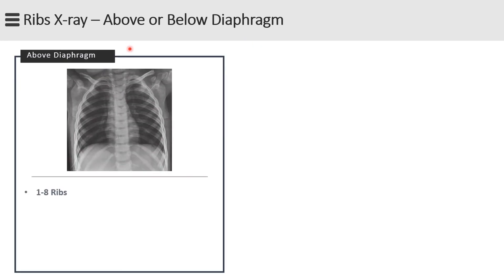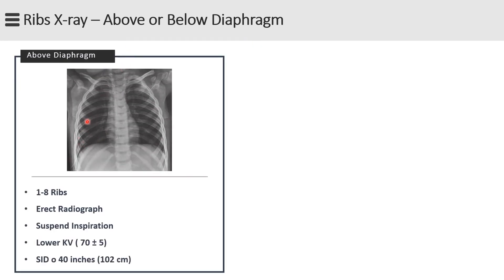The upper 9 posterior ribs generally represent the minimum number of ribs above the diaphragm on full inspiration. However, with painful ribs, the patient may not be able to take as deep an inspiration, so only 8 posterior ribs may be seen above the diaphragm. In that case, you should take the radiograph in an erect position if the patient is able to, as gravity will assist in lowering the diaphragm and allows the patient to take a deeper breath. Exposure should be done at the end of suspended inspiration. As upper ribs are surrounded by lung tissue, a lower kilovoltage will preserve better contrast.